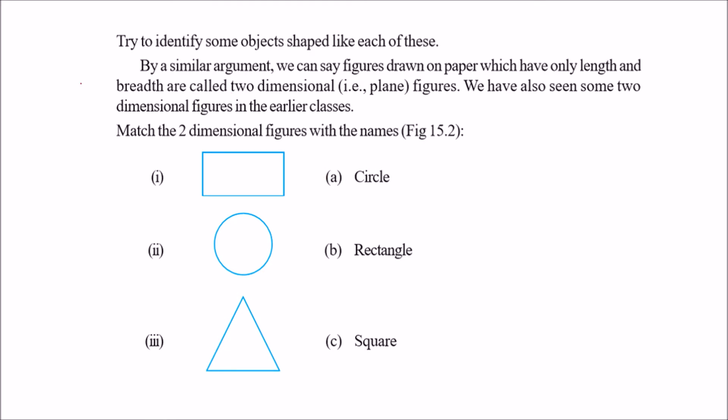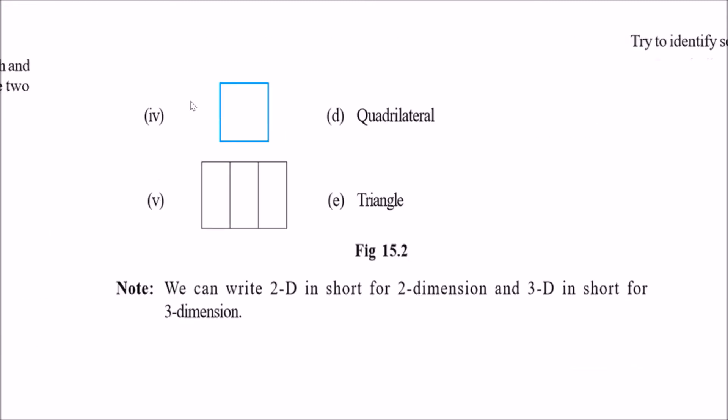What you can show on the screen or draw on paper will be regarded as 2D because we have only x and y in paper also. So, this is a circle, this is a rectangle, this is a triangle, this can be regarded as a square, and this can be regarded as a quadrilateral.